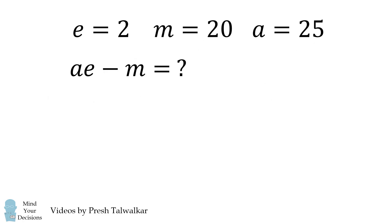So now we need to solve for the value of a times e minus m. We have 25 times 2 minus 20. We also need to remember the order of operations that multiplication takes precedence. So 25 times 2 is equal to 50, and then 50 minus 20 is equal to 30. And that's the answer.